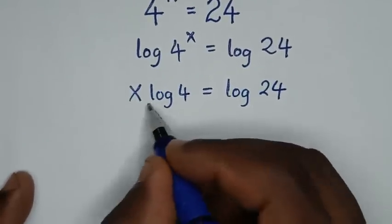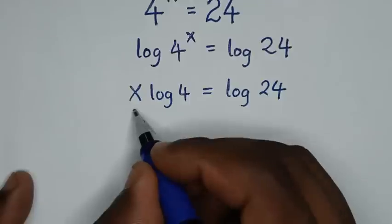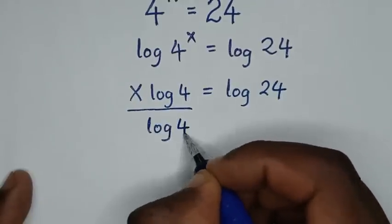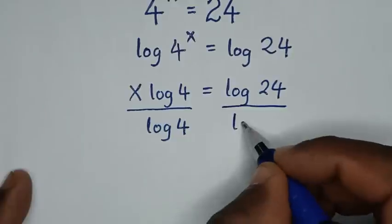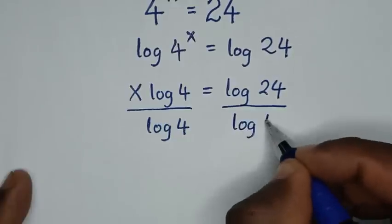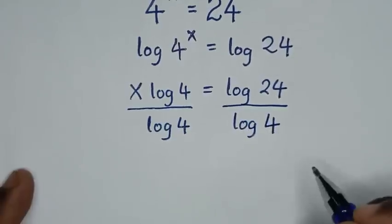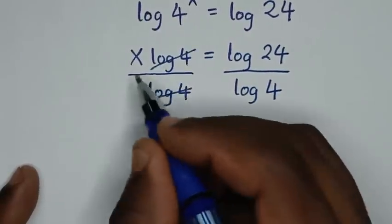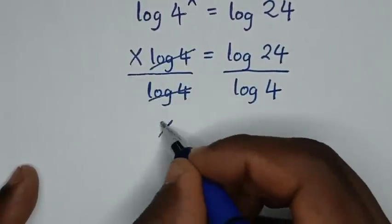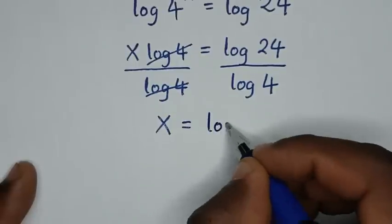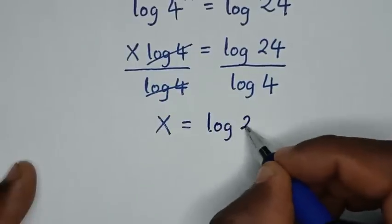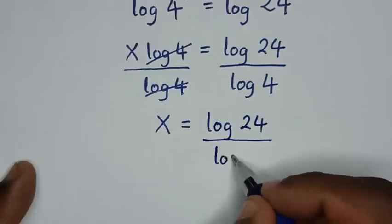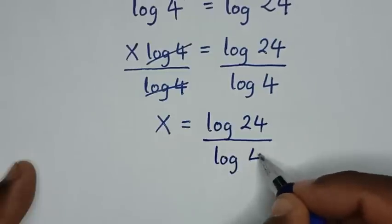Then we will divide by log of 4 on both sides — log of 4 over log of 4 will cancel — so it will be x is equal to log of 24 over log of 4.